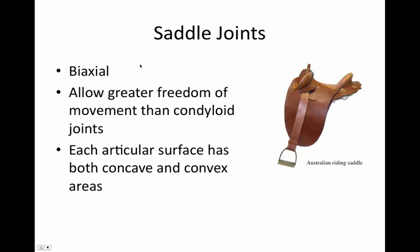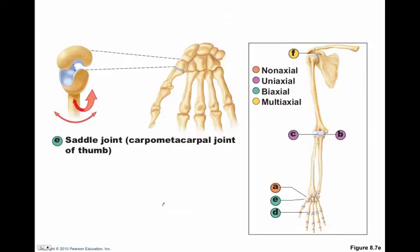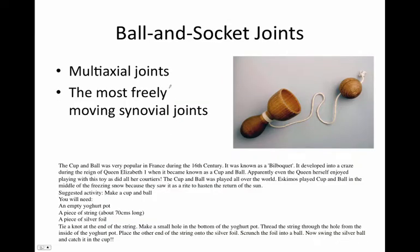Saddle joints are biaxial, meaning movement in a two-axis system. They allow greater freedom of movement than condyloid joints, and each articular surface has both concave and convex areas. The classic saddle joint is the carpometacarpal joint of the thumb — the movement from the carpals into the metacarpal. So when you think about the movement of your thumb, the joint it forms with the carpals is a saddle joint.